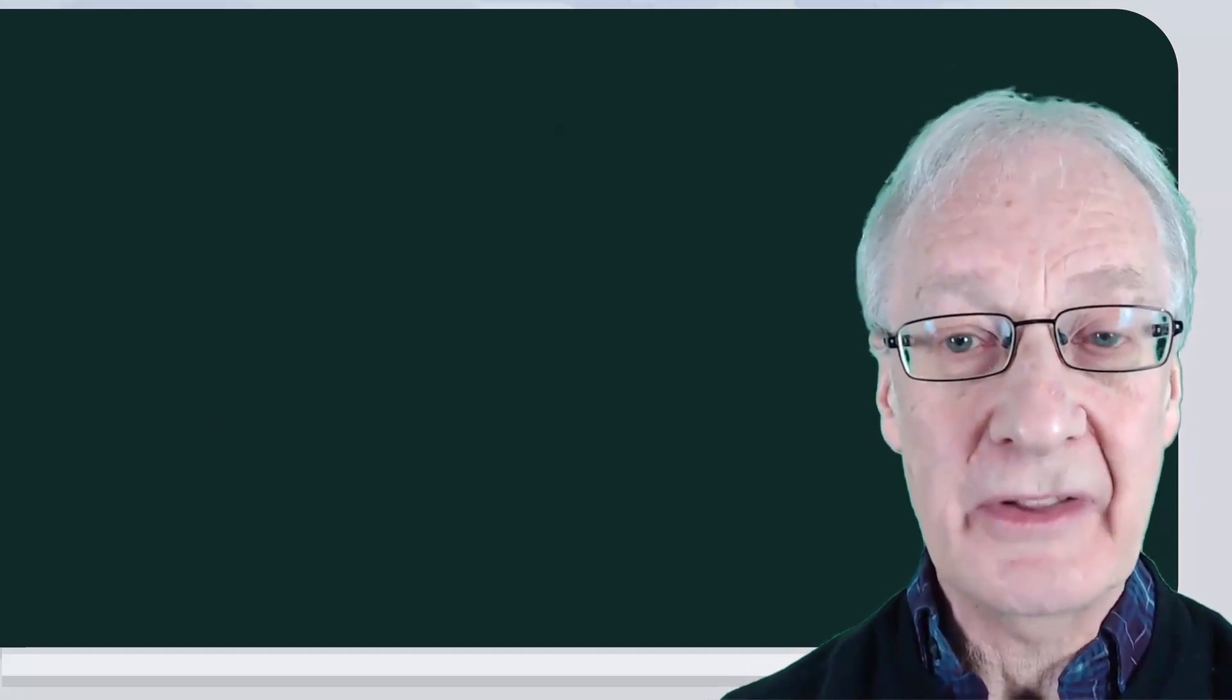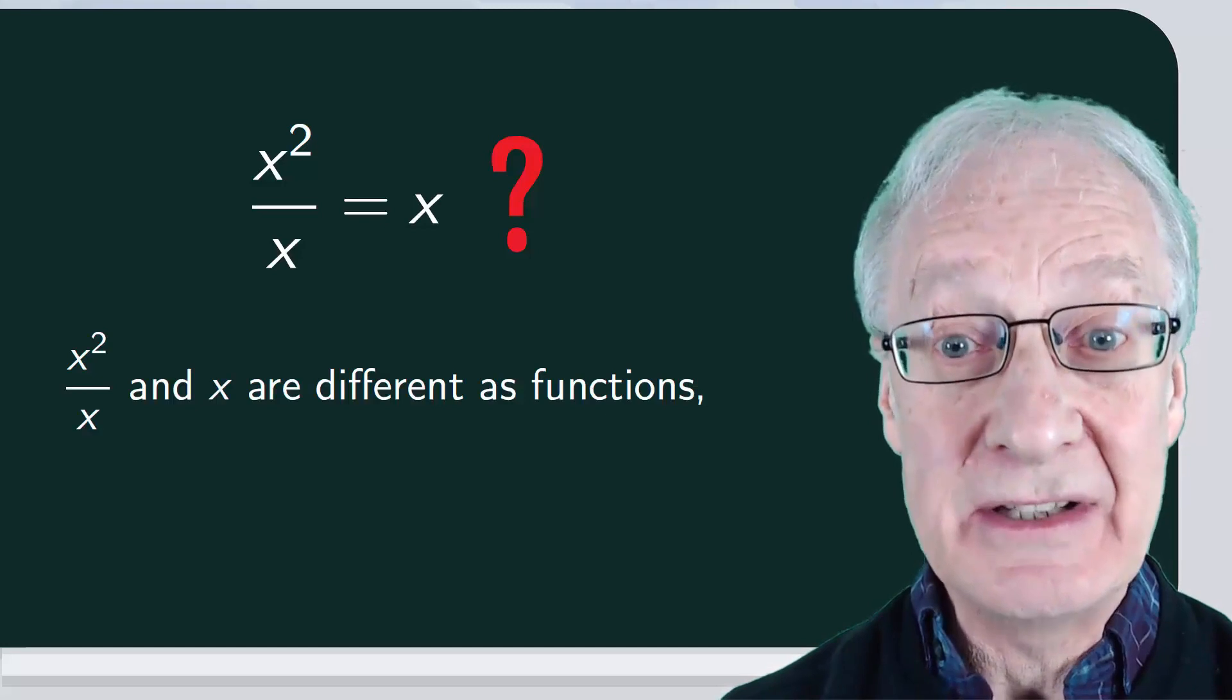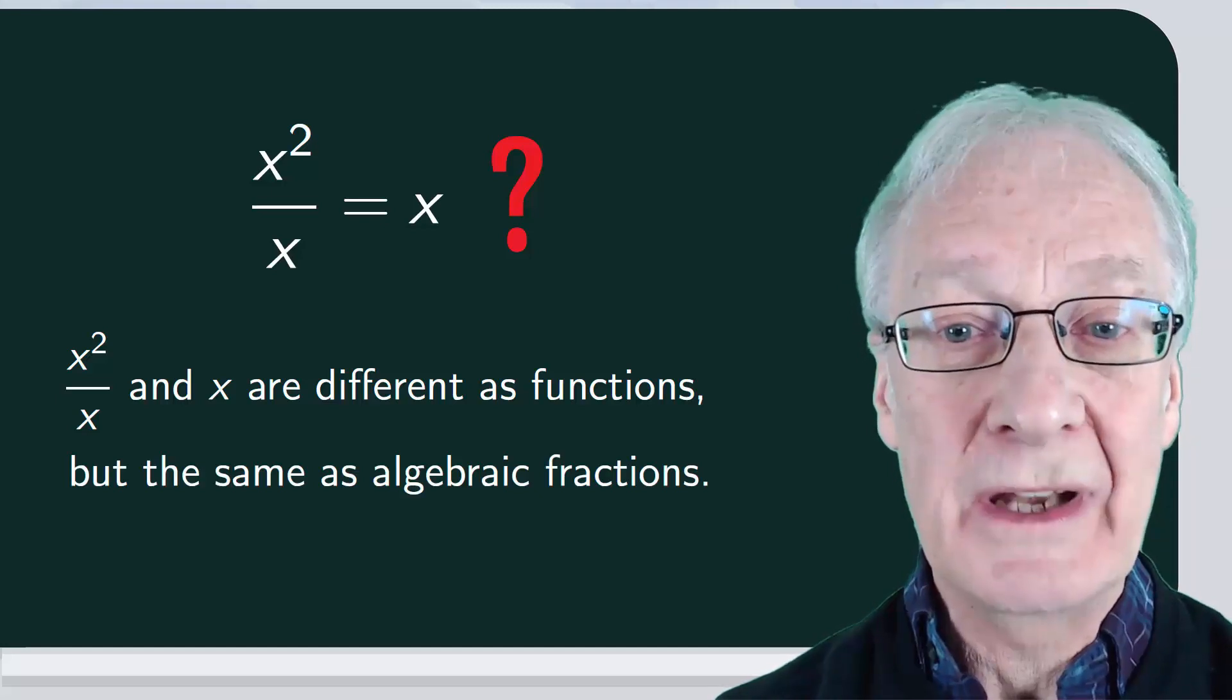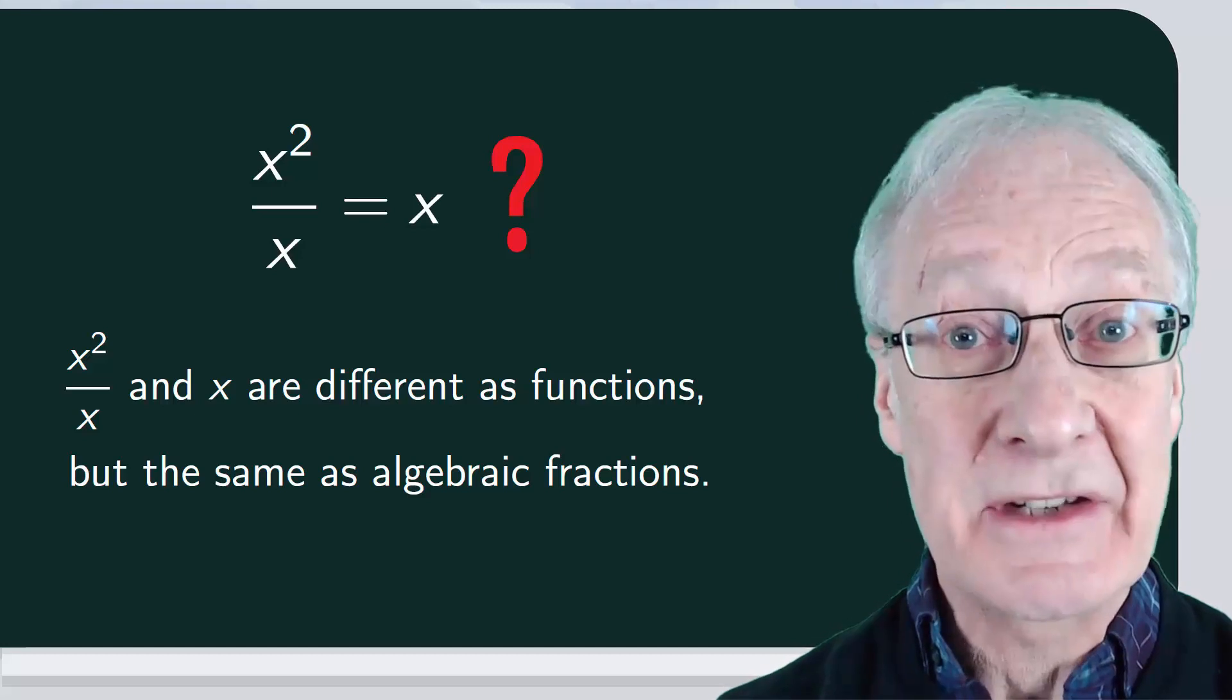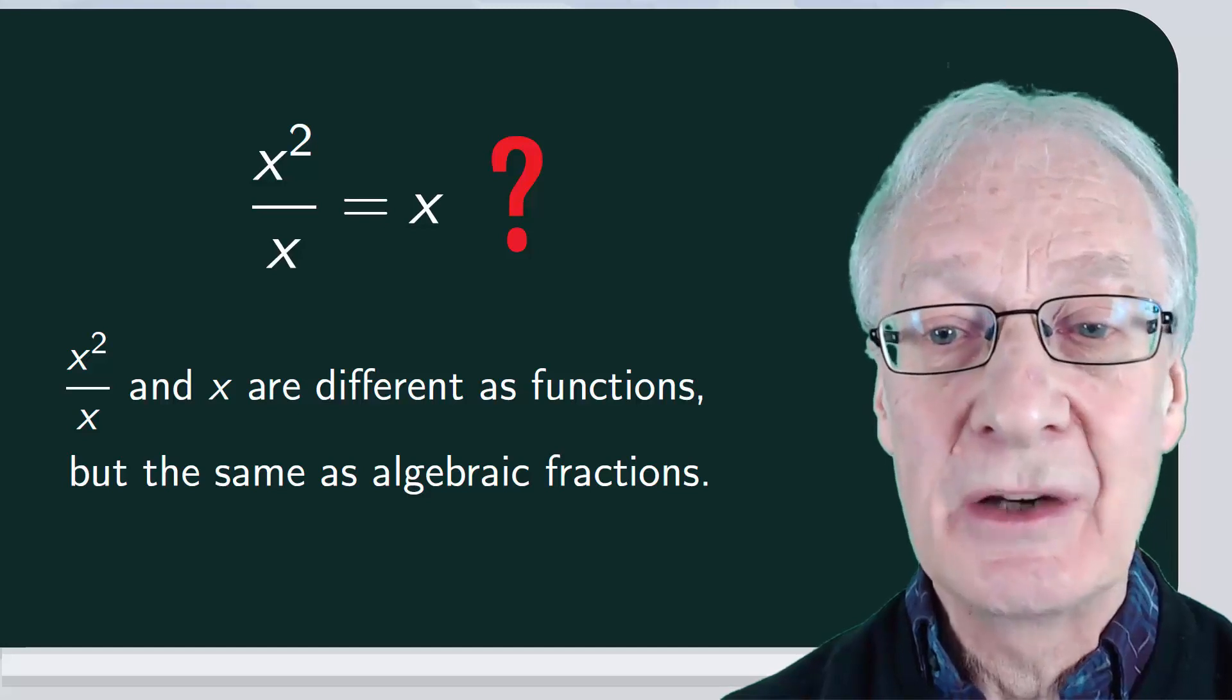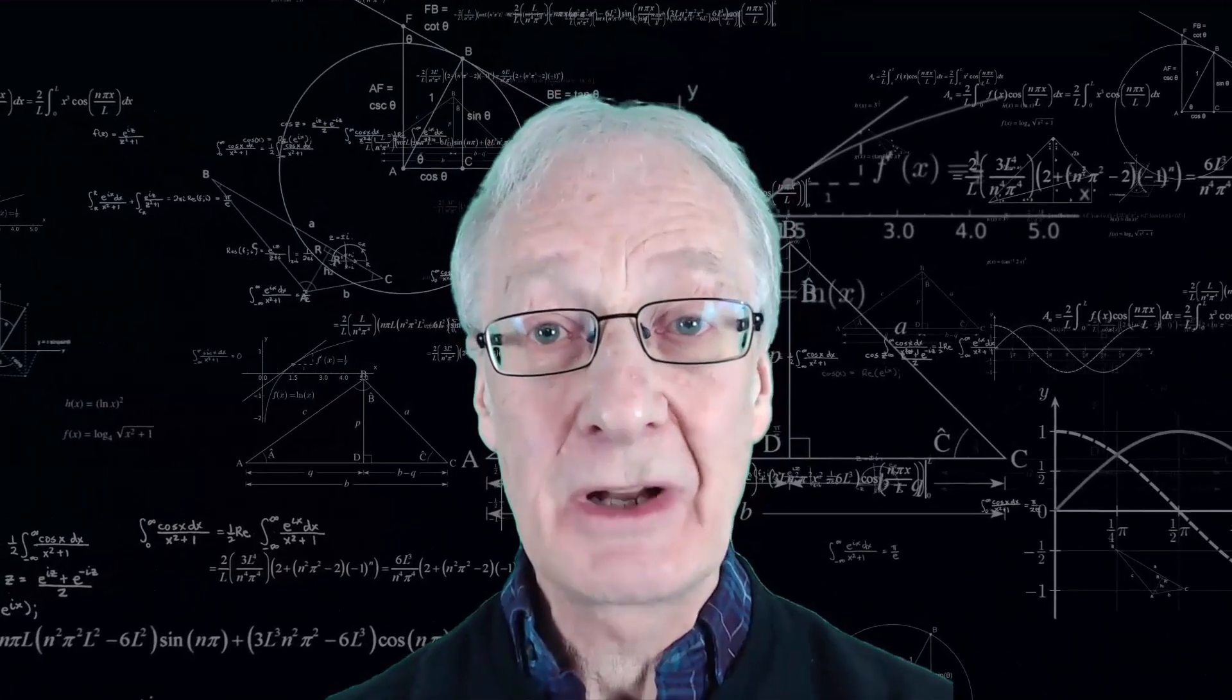So, to conclude, the answer to the question is, x squared over x and x are different when considered as functions, but they're the same when considered in terms of algebraic fractions. As in other occasions in mathematics, depending on the context in which we find ourselves, we'll interpret the outcome one way or some other way.